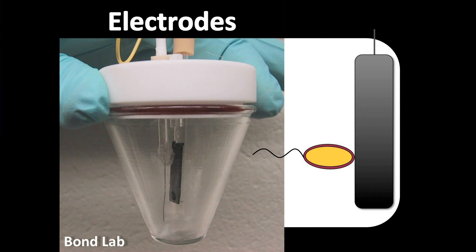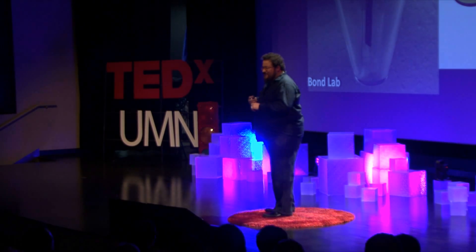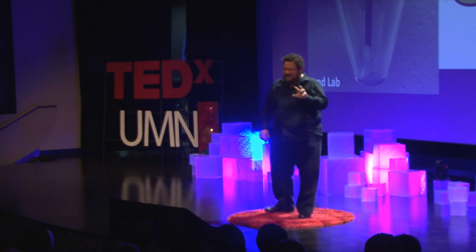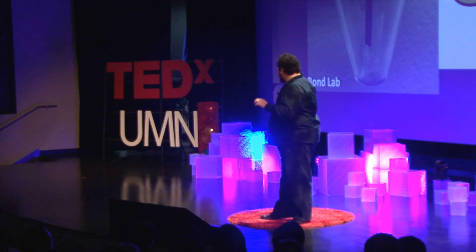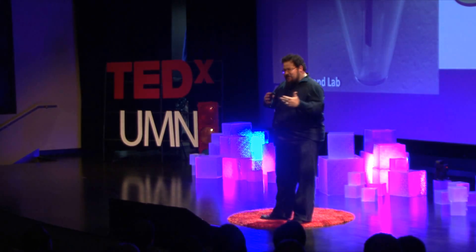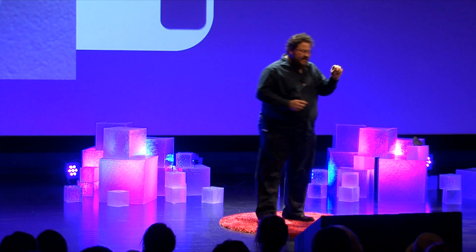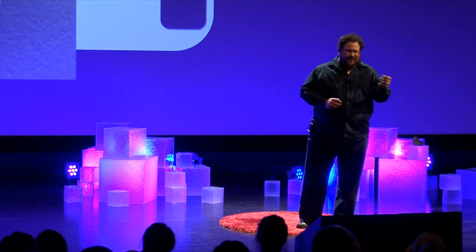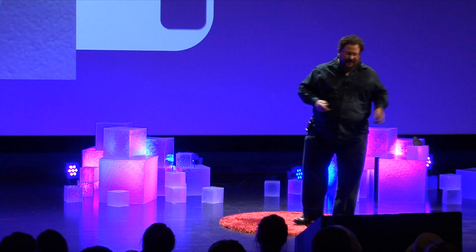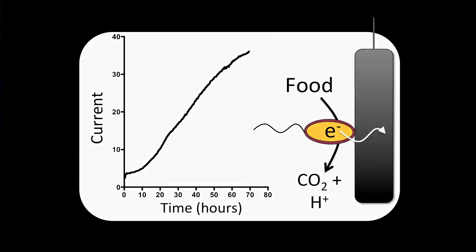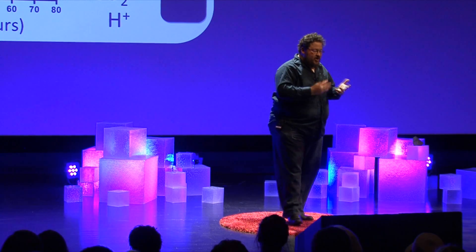We do this in collaboration with Daniel Bond's group at the University of Minnesota. They make bioreactors shown here. The bacteria attach to a little carbon graphite electrode surface and basically think that it's rust. The food we give them is converted into electricity. The bacteria attach to the electrode, eat the food, convert it to CO2 and protons, and the electrons end up going to the electrode. We can generate current over time.